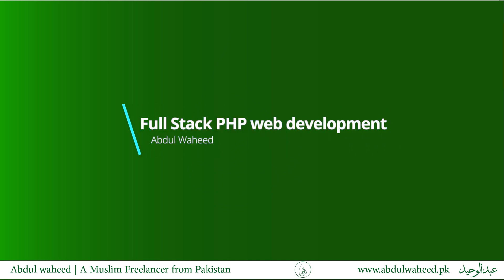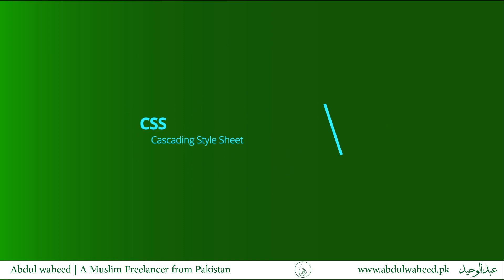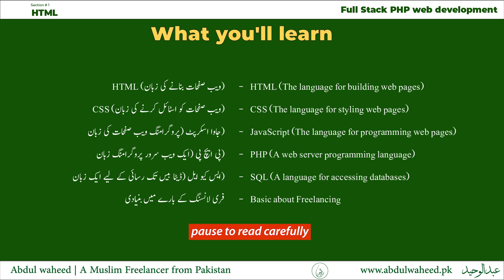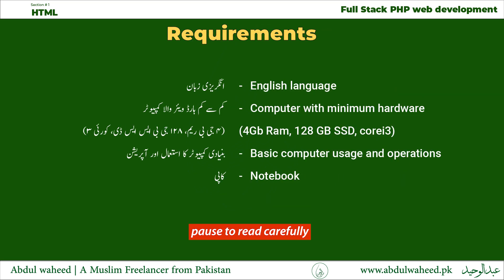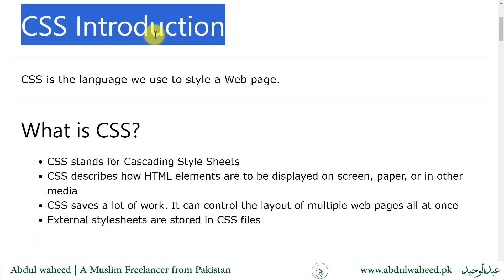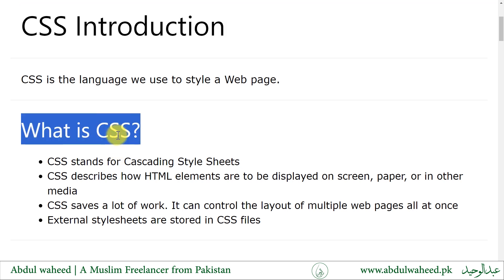Welcome to the FullStack PHP Web course. CSS is the language we use to style a web page. CSS stands for Cascading Style Sheets. CSS describes how HTML elements are to be displayed on screen, paper, or in other media. CSS saves a lot of work — it can control the layout of multiple web pages all at once. External style sheets are stored in CSS files.